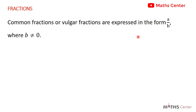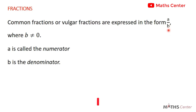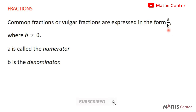So fractions are expressed in the form A over B. Now the top part, which in this case is A, is called the numerator. Then B, which is the bottom part, is called the denominator. So whenever you have a fraction like 1 over 2, 1 is called the numerator and 2 is called the denominator.